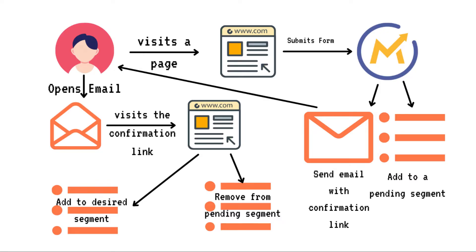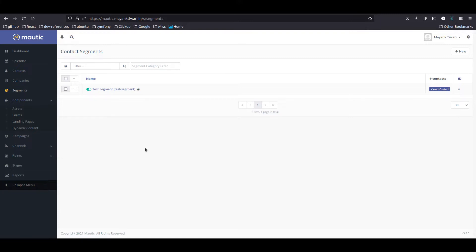There are actually multiple possibilities how you can create double opt-in, but I'm going to take an easy approach so that any new user can do it. So what is a double opt-in campaign? When you place your form somewhere on your website or landing page and you are taking someone's email, you want to ensure that the person who submitted the email is actually interested and is the one who submitted this form.